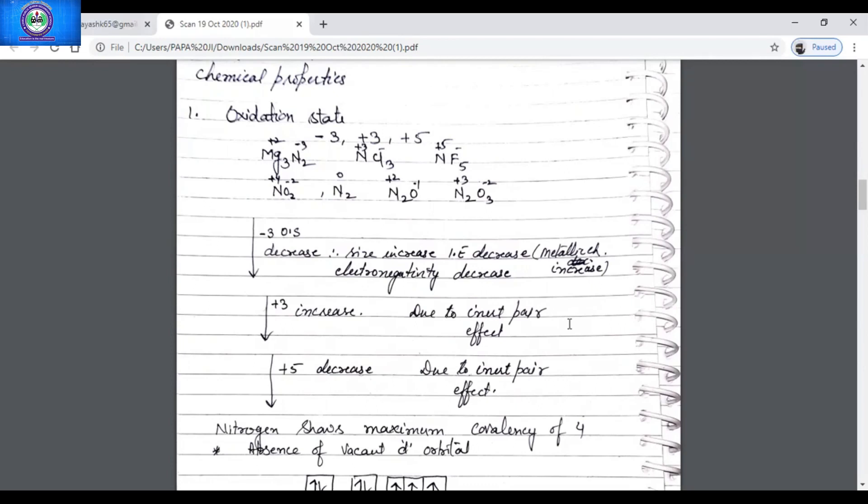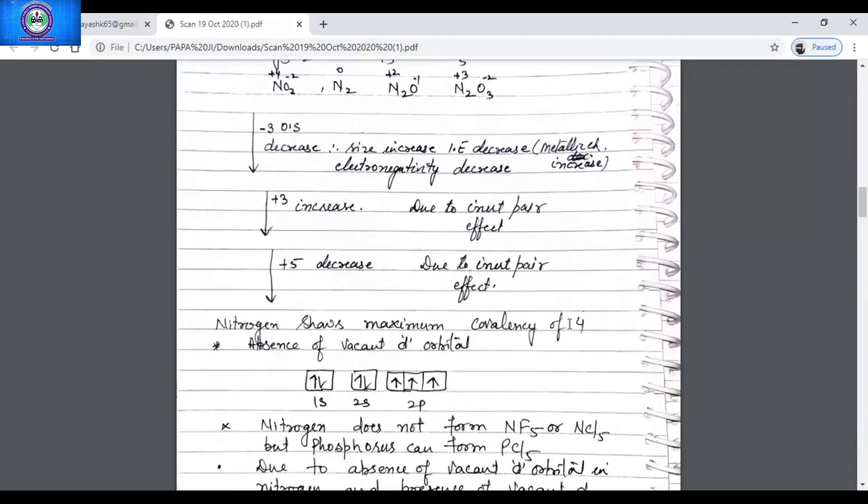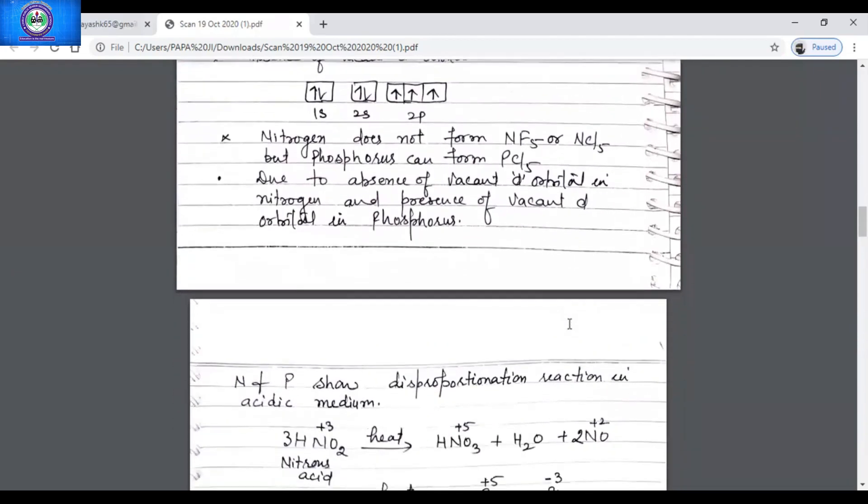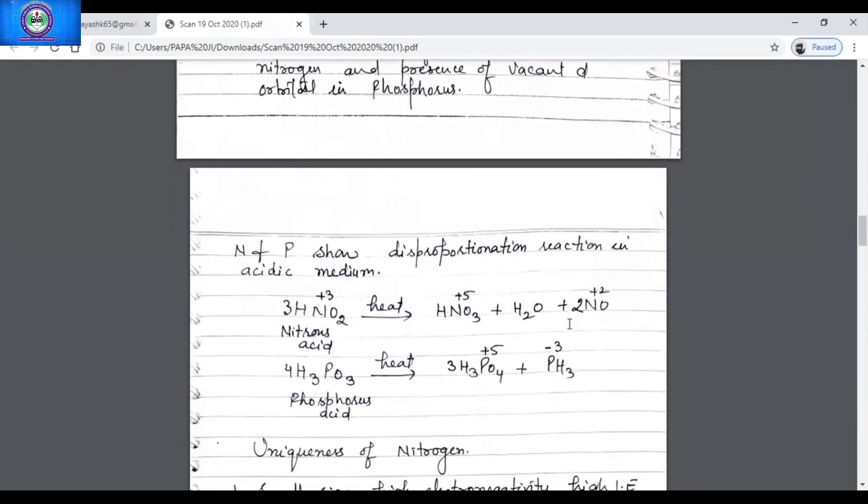Nitrogen shows maximum covalency of 4. It can't exceed its covalency more than 4. The other members of group 15 show covalency more than 4. Like nitrogen does not form NF5 or NCl5, but phosphorus can form PCl5. It's due to the absence of vacant d orbital in nitrogen and the presence of vacant d orbital in phosphorus.